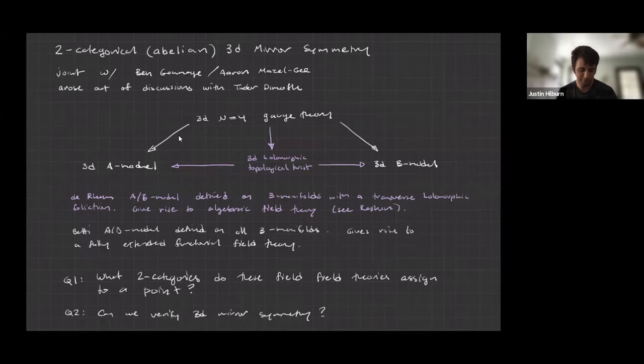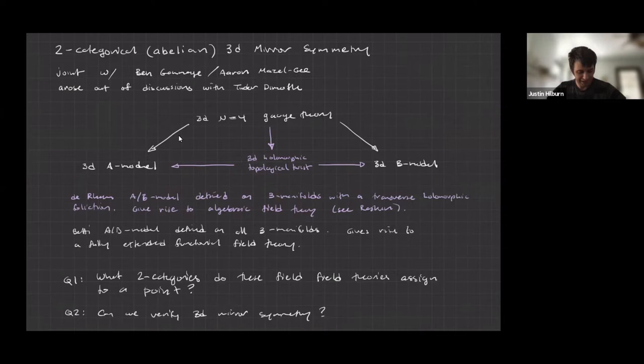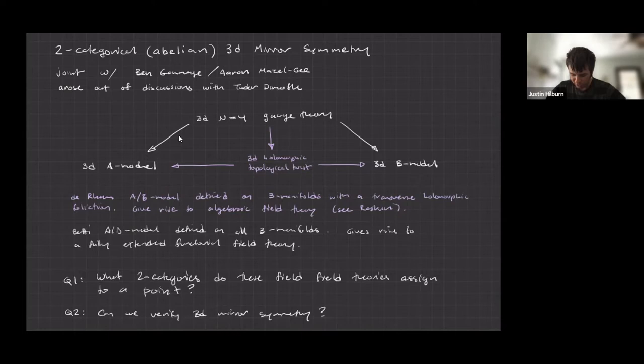Benji and I had a sort of dumb idea of how we were going to prove this theorem, and it ran into insurmountable infinity-categorical difficulties. But Aaron straightened them all out, so we do know how to prove everything I'm going to talk about today. A lot of this arose out of discussions with Tudor — we had a project on knot homology and needed to dip into the two-categorical structure.